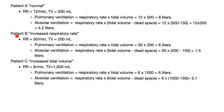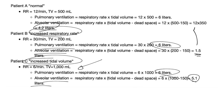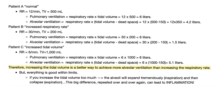Compare subject A (normal: rate 12, tidal volume 500, alveolar ventilation 4.2 L), patient B (increased respiratory rate: pulmonary ventilation looks like 6 L but alveolar ventilation is only 1.5 L — horrible), and patient C (increased tidal volume: pulmonary ventilation still 6 L but alveolar ventilation is 5.1 L — much better). Therefore, increasing tidal volume is far better than increasing respiratory rate for achieving more alveolar ventilation.